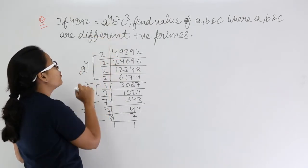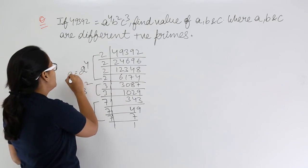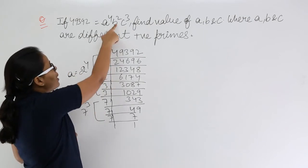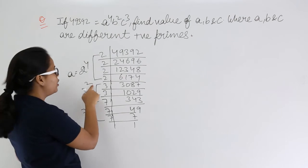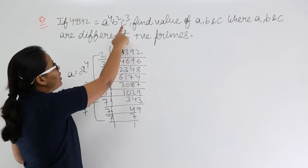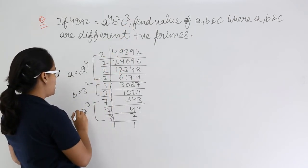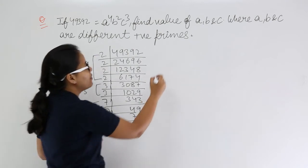You can see here, a to the power 4 is here, so the value for a will be 2. b to the power 2 is here, and here 3 to the power 2, so value for b will be 3. c to the power 3, 7 to the power 3, so value for c will be 7.